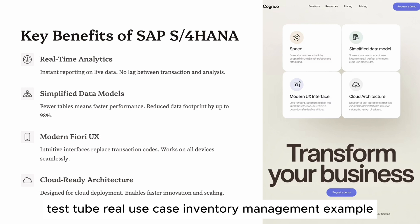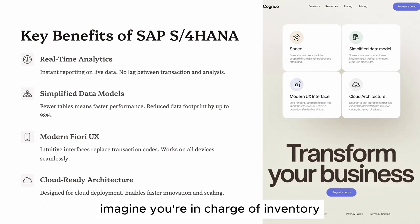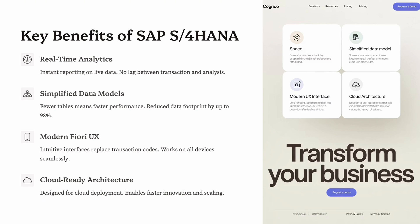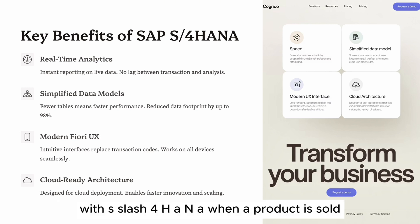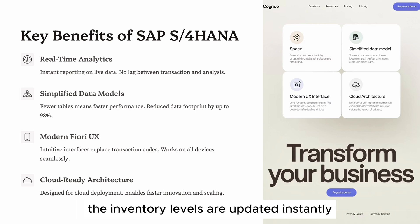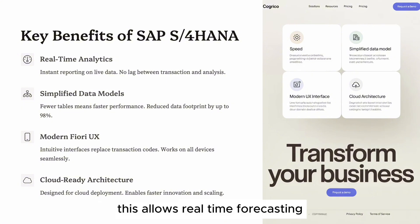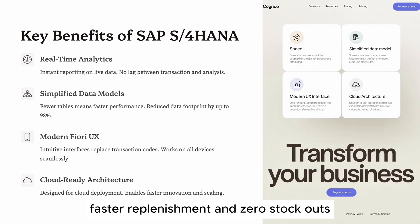Real use case: Inventory management. Imagine you're in charge of inventory in a retail company. With ECC, stock updates could take hours to reflect. With S/4 HANA, when a product is sold, the inventory levels are updated instantly across finance, logistics, and purchasing. This allows real-time forecasting, faster replenishment, and zero stockouts.